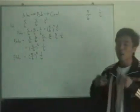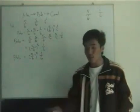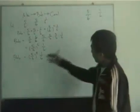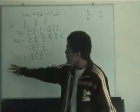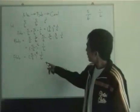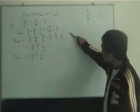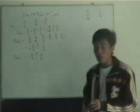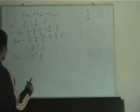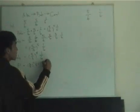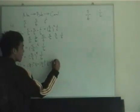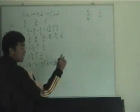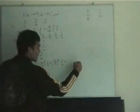Carol could get a six on her first, second, third throw, or even much later — we don't know which. So the total probability P that Carol gets a six is the sum of all these individual probabilities: P = (5/6)²·(1/6) + (5/6)⁵·(1/6) + (5/6)⁸·(1/6) + ... continuing to infinity.